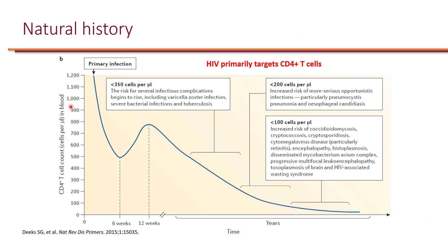Here's the problem in advanced HIV. A normal person has a large amount of CD4 cells — on the y-axis we're looking at concentration of CD4 cell count in the blood, and on the x-axis, time. Once a person gets a primary HIV infection, these CD4 cells start to go down. Without ART, by the time CD4 hits less than 350, the risk of some infections goes up, including viral infections like varicella zoster as well as bacterial infections like tuberculosis.